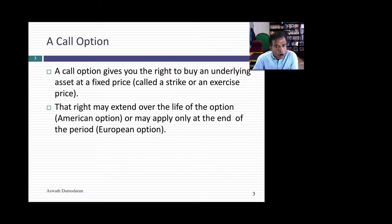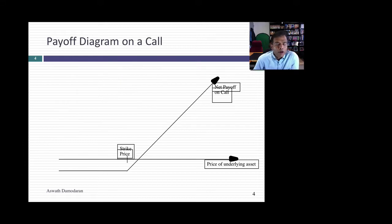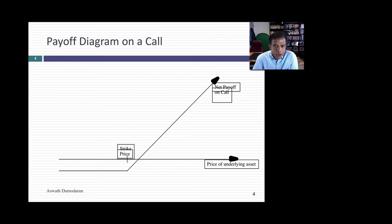Let's look at the payoff diagram for a call option. A call option gives you the right to buy an underlying asset at a fixed price. You can exercise that right anytime through the life of the option if you have an American option, or only at expiration if you have a European option — nothing to do with geography, it just specifies when you can exercise. The strike price becomes the tipping point: if the stock price is greater than the strike price you will exercise and make the difference. If the stock drops below 50 you will not exercise — it's a right, not an obligation. What you lose is what you originally paid to get the option: limited losses, potentially unlimited profits.